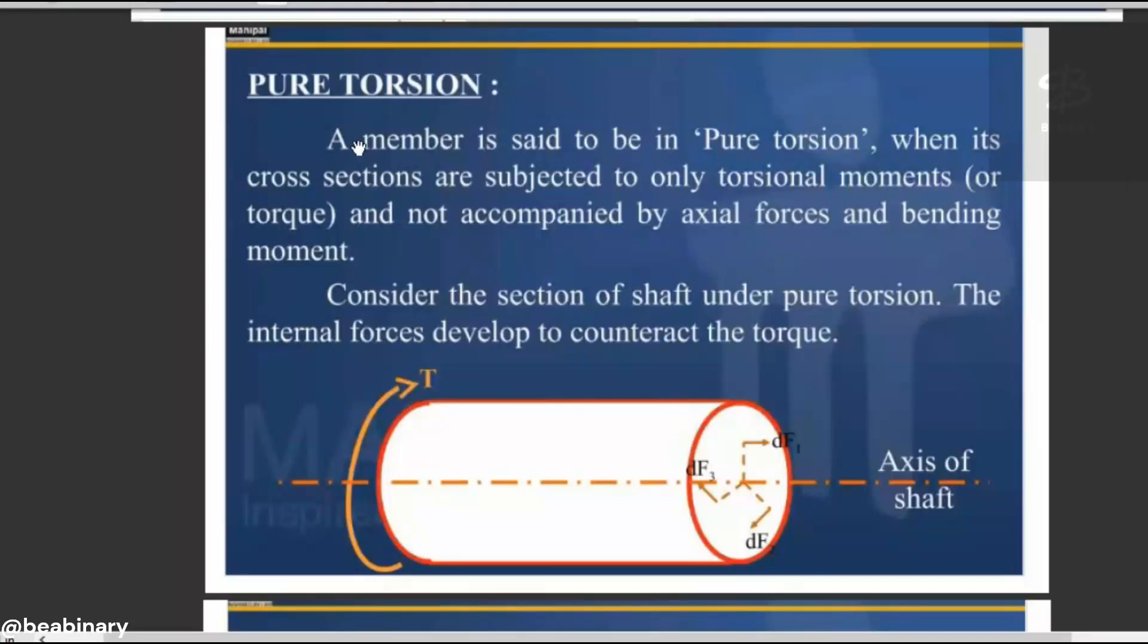Pure torsion: A member is in pure torsion when its cross-sections are subjected to only torsional moments. The cross-section has any cross-sectional area with torsional moment because of that torque, and no other force is active.